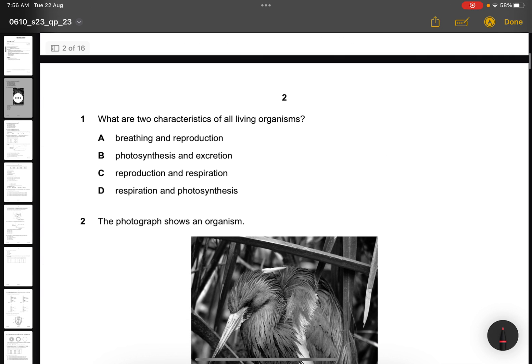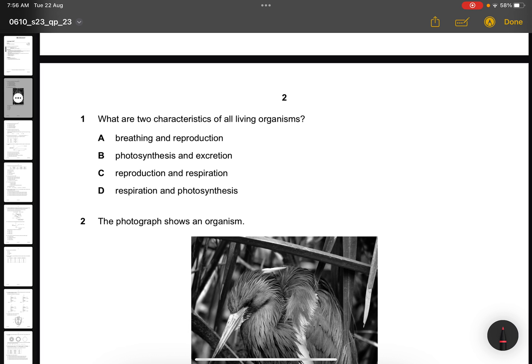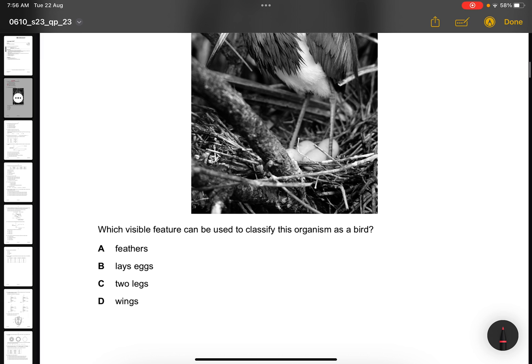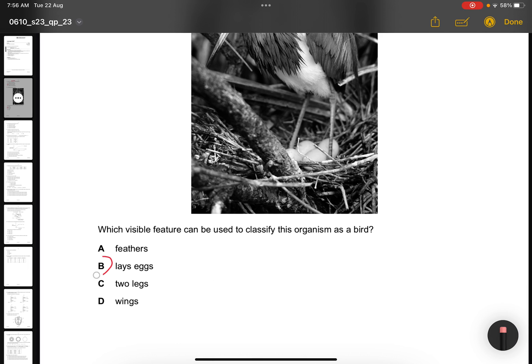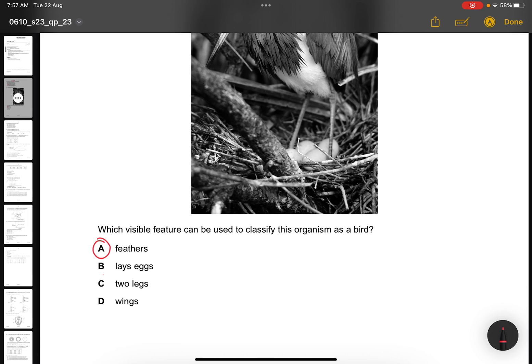Question 1. What are the two characteristics of all living organisms? Living organisms means Mrs. Grant, so the answer is C, reproduction and respiration. Question 2. The photograph shows an organism. Which visible feature can be used to classify this organism as a bird? It has feathers, not lays eggs, because reptiles also can lay eggs.